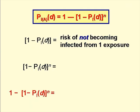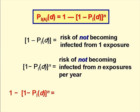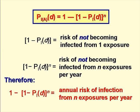So how does this come about? Well, as we have seen, PID is the risk of becoming infected as a result of a single exposure to the pathogen dose D. Therefore, 1 minus PID is the risk of not becoming infected as a result of a single exposure to the pathogen dose D. So (1 minus PID) to the power N is the risk of not becoming infected as a result of N exposures to the pathogen dose D. Thus, 1 minus (1 minus PID) to the N is the annual risk of becoming infected as a result of N exposures per year to the pathogen dose D.